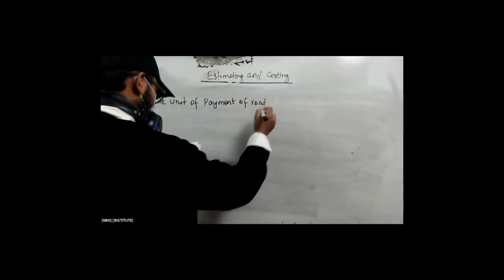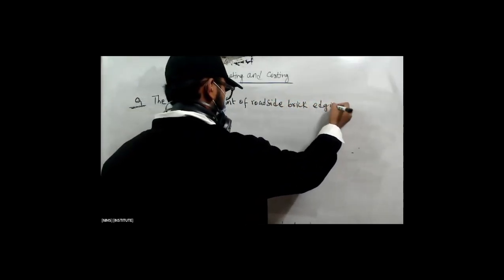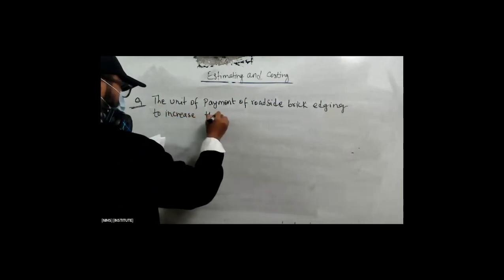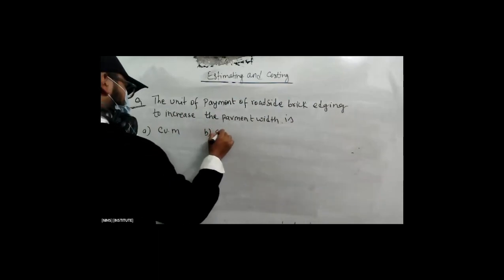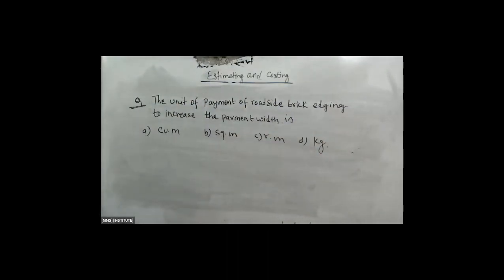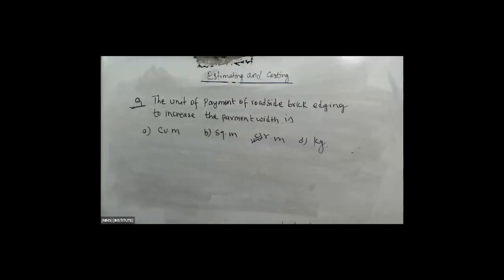The unit of payment for roadside brick edging to increase the payment width. Option A — cubic meter, Option B — square meter, Option C — running meter, Option D — KG. The result: C is the result of running meter. B is the result of C — running meter. In the book, you can search B or C. The road is the result of C.